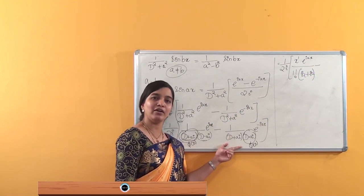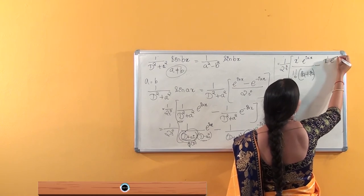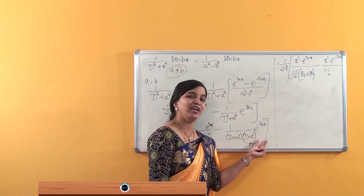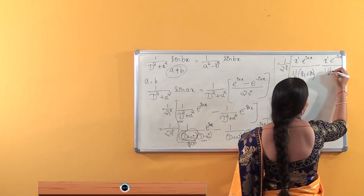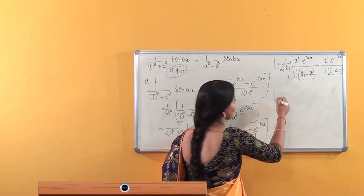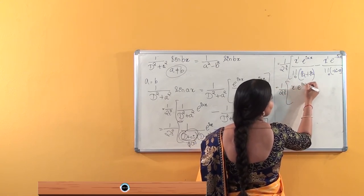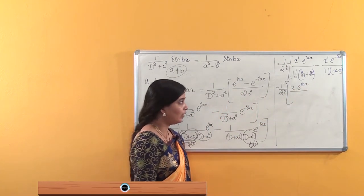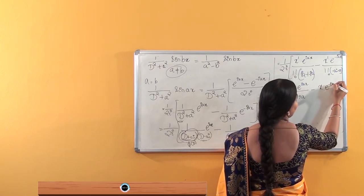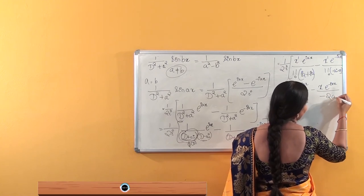Applying the same formula for the second term, we get x^1·e^(−iax) / 1!, where φ(D) is (D−ai), giving (−ai − ai) = −2ai. Putting it all together, we have 1/(2i) times [x·e^(iax)/(2ia) minus x·e^(−iax)/(−2ai)].